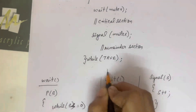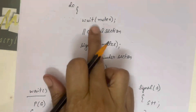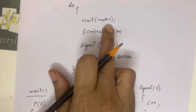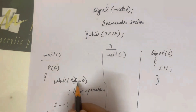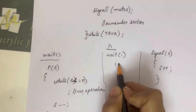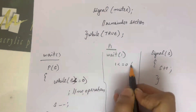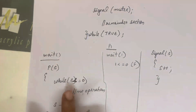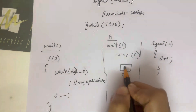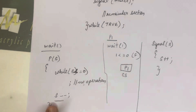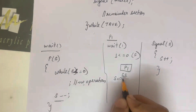Initially the mutex value is 1. When P1 wants to enter the critical section, it calls wait(mutex) — that is wait(1). It checks the condition: is s less than or equal to 0? Since s is 1, the condition is false, so it exits the while loop and enters the critical section. Before entering, s is decremented from 1 to 0.